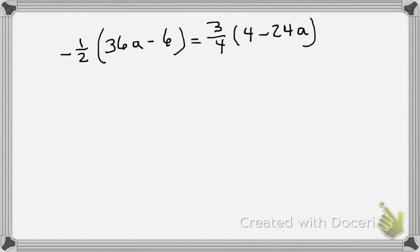Here's a problem where one variable is on both sides, but this time we have fractions. There are a couple of things you can do: you can distribute the fractions and do it that way — these are nice easy ones so it'll work fine — or you can find a common denominator and multiply that to both fractions to eliminate them. I prefer to just do the fractions right now.